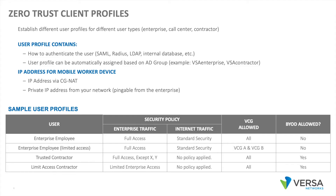These user profiles contain how to authenticate the user. The user profile can be automatically assigned based on AD groups. In terms of assigning IP addresses, we can do this either via CGNAT or a private IP address from your network, pingable from the enterprise. In this example, we have multiple user profiles, each with a different security policy for enterprise and internet-bound traffic. We can identify which cloud gateways are allowed per user group, and whether BYOD is permitted or not.